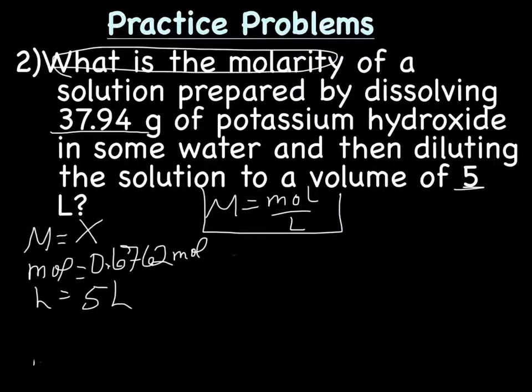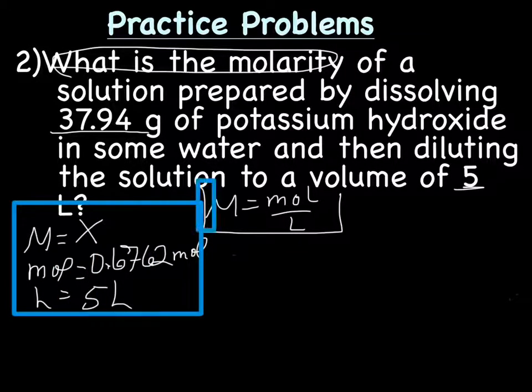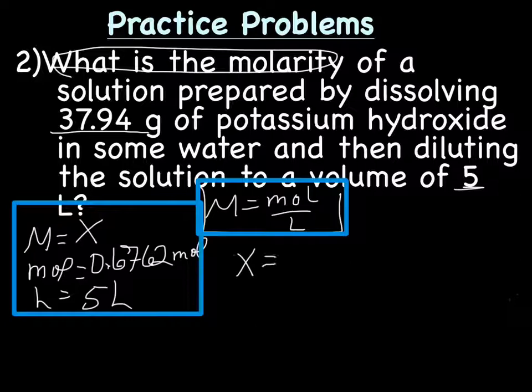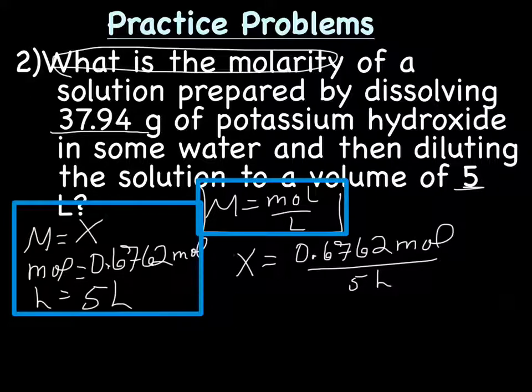Let me get rid of our mole conversion here, since we now have the answer. So now that we've done all that work, we can now start the problem, which is we're going to plug in this information into this guy here. So we're going to have molarity equals mole over liters, so we're going to have molarity, which is X this time, equals 0.6762 mole divided by 5 liters.